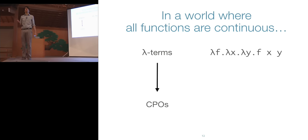With that setup, I'd like to explain one of the new principles we add to type theory to get homotopy type theory: Voevodsky's univalence axiom. Before stating it formally, I want to illustrate what univalence does without mentioning univalence at all — and the example I'll use involves monads. I think it's actually in the ICFP bylaws that at least one invited speaker must mention the word monad.